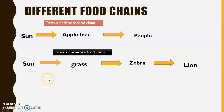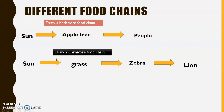Here are different food chains. A herbivore is an animal that eats only plants — the way to remember this is that the first part of the word is 'herb,' and herbs are plants. Here's an energy chain of a herbivore: light energy from the sun goes to an apple tree and then to a person. Here is another energy chain of a carnivore: light energy from the sun goes to the grass, eaten by the zebra, and the zebra is eaten by the lion.